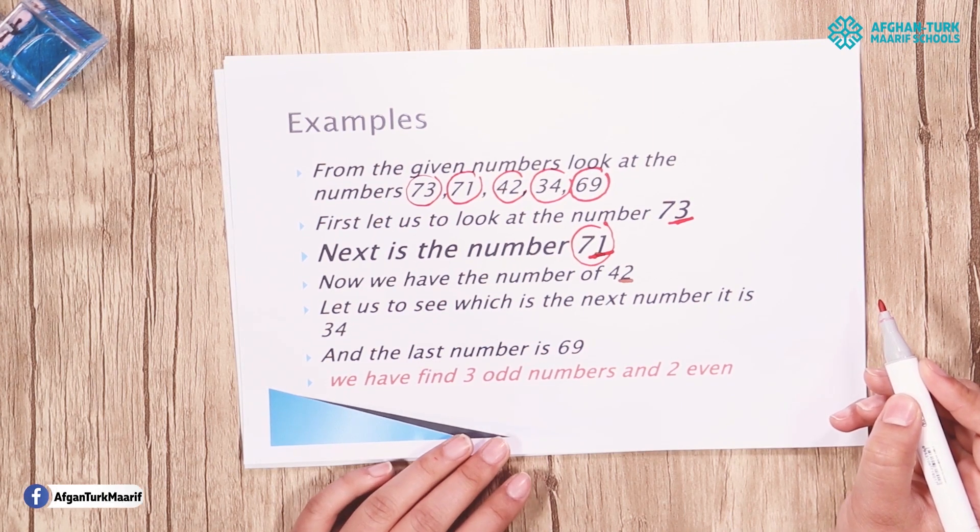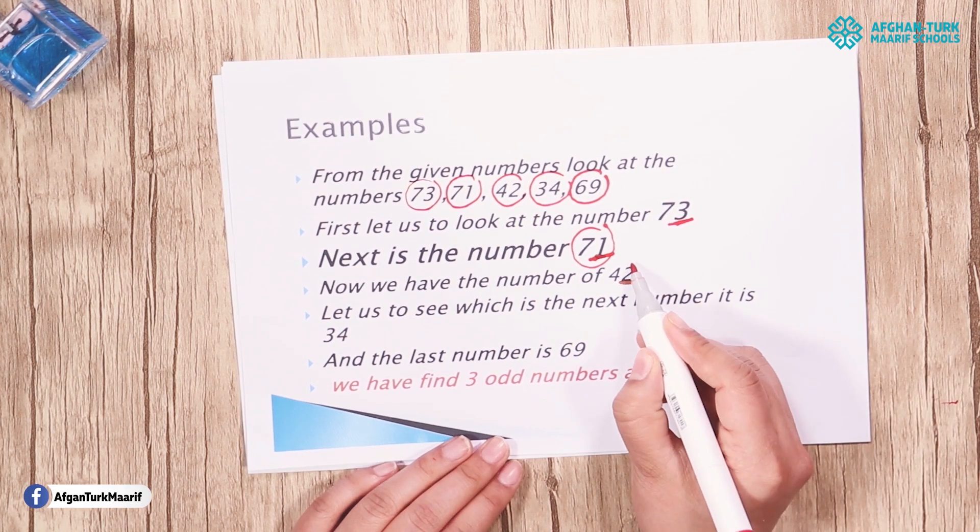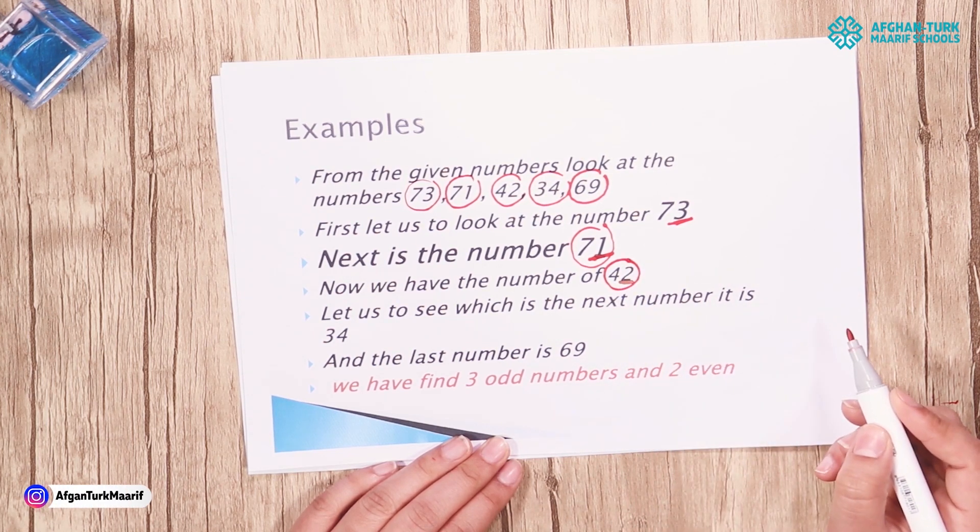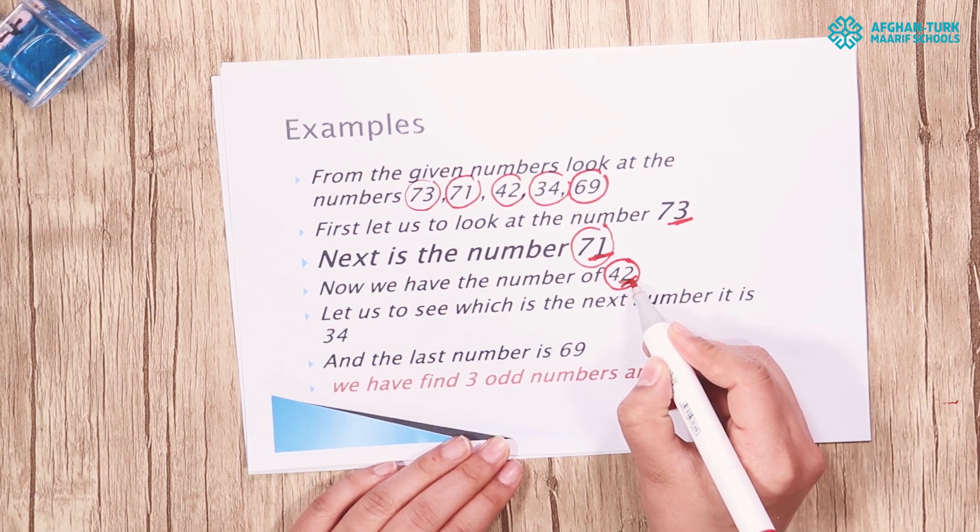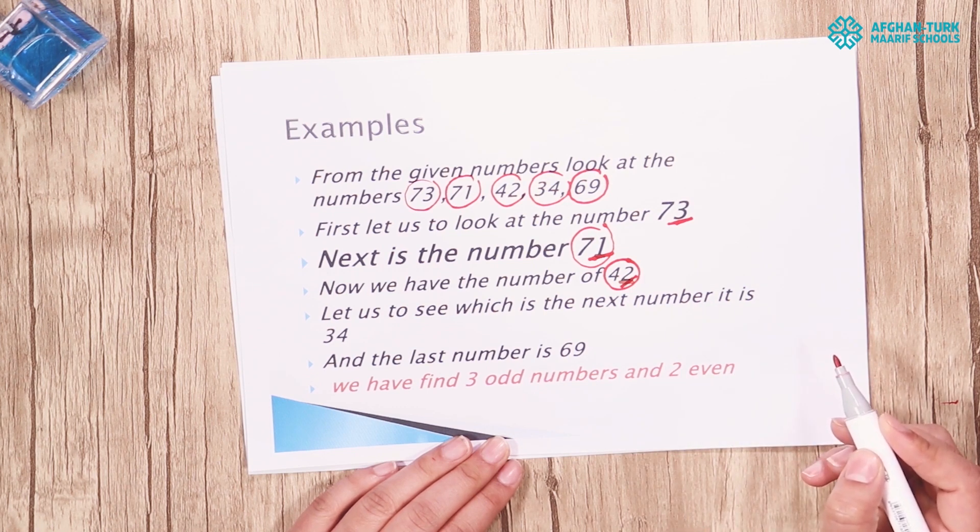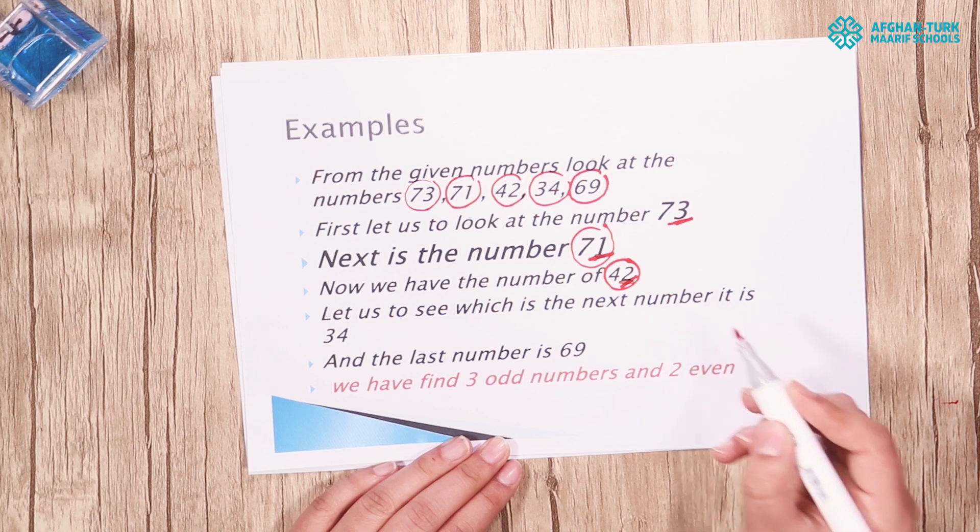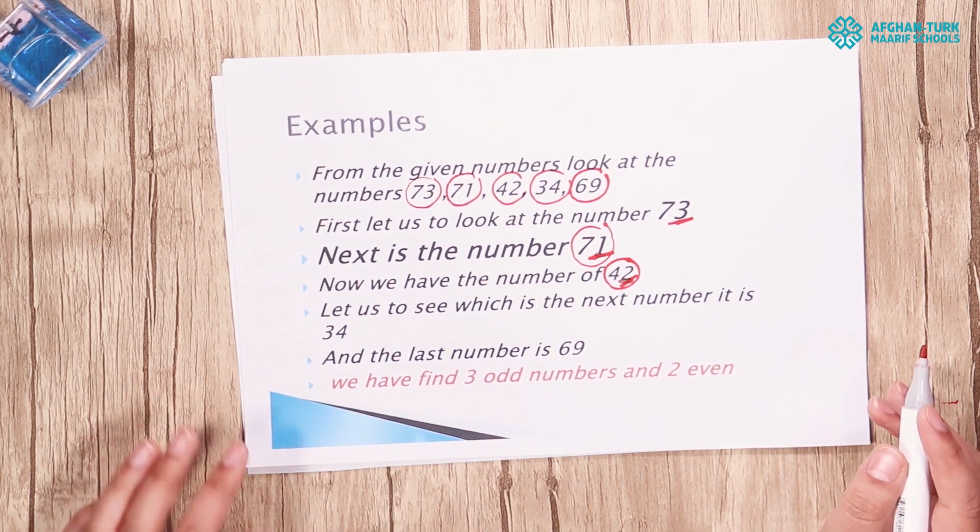Now we have the number of 42. The number 42 has 2 in ones place so we can say that the number 42 is an even number. And the last number is 69.